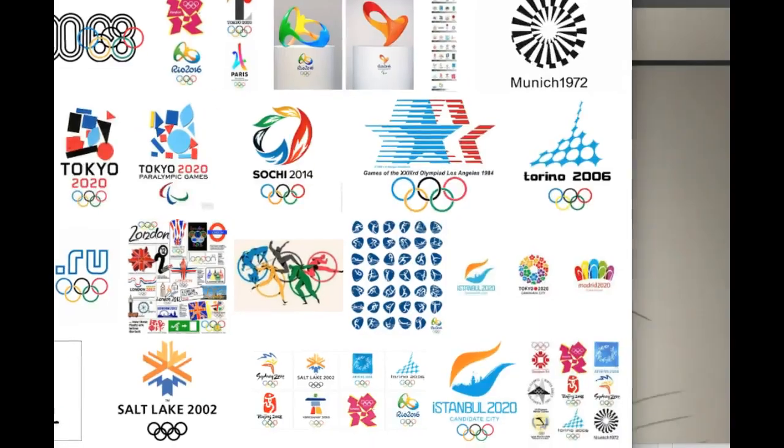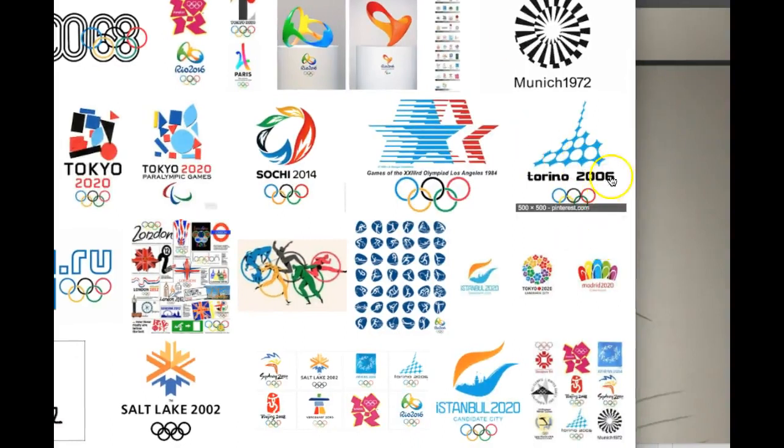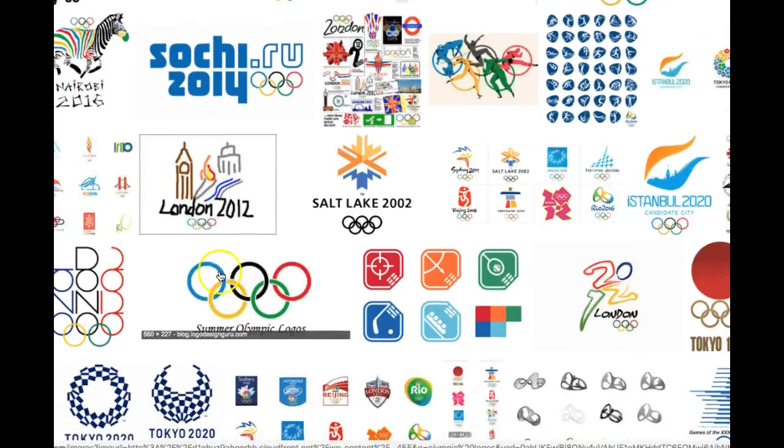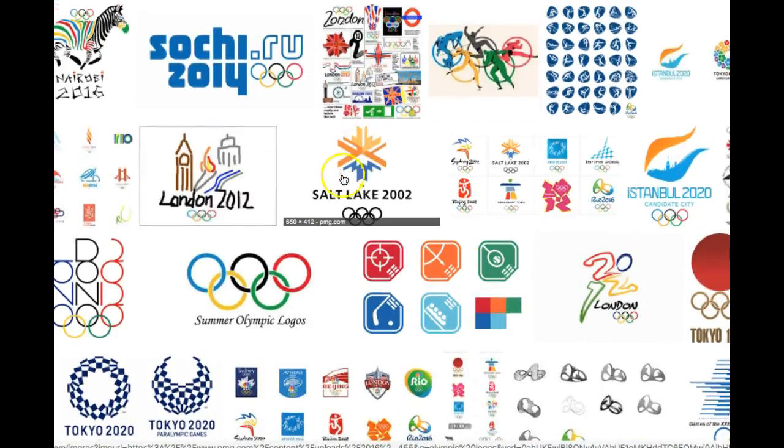Let's take a look at Torino 2006. How many visual stops? One, two, three. That's it. Let's look at Sochi. One, two, three. That's it. Okay, so you see what I'm saying. Even Sochi, the word mark for Sochi is just, it's so straightforward. London 2012, I'm not sure what that is. That was not their logo. But Salt Lake City, how many visual stops?